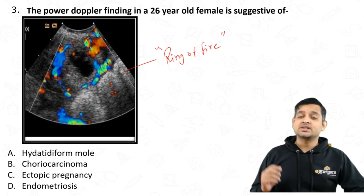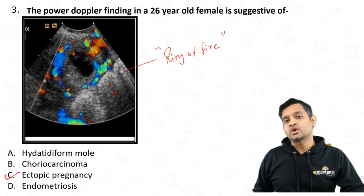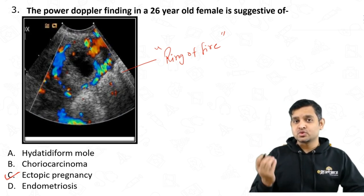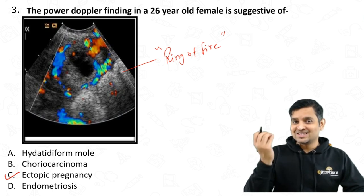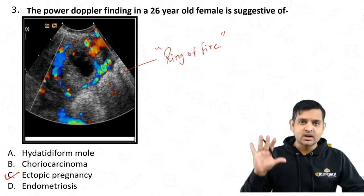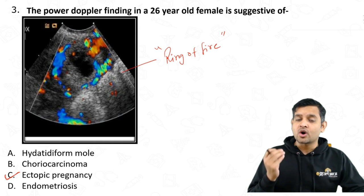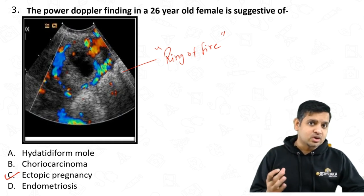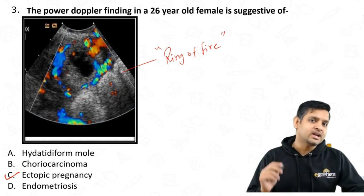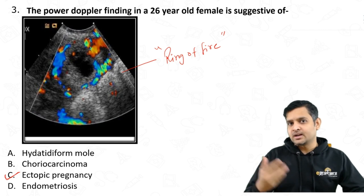The ring of fire appearance is a very useful sign used in radiology reports to confirm ectopic pregnancy. The most useful sign of ectopic pregnancy is seeing a viable embryo in a gestational sac outside the uterine cavity — if you see this, it goes without doubt that you are dealing with ectopic pregnancy. But in the majority of cases that doesn't happen, and what you see on radiology is a complex solid-cystic lesion. The ring of fire sign is then very useful to identify ectopic pregnancy, along with clinical features and beta-hCG.